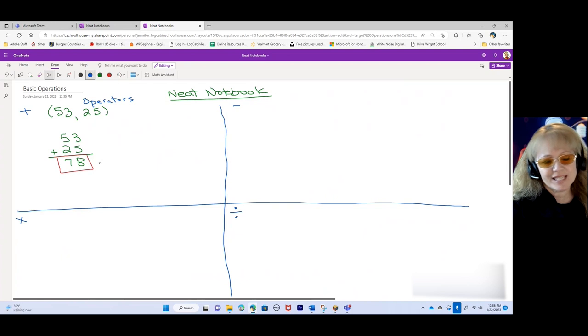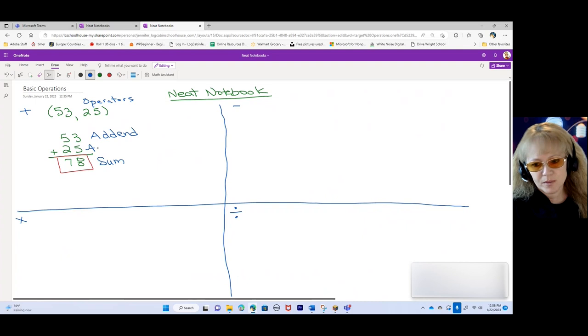Now I'm going to switch to another color. I'm going to say, what is the name of my answer here? And they're going to become really good at this and they're going to holler sum. And then I'm going to say, what are the parts called that make the sum? And they're going to say addend. Addend plus addend equals sum.